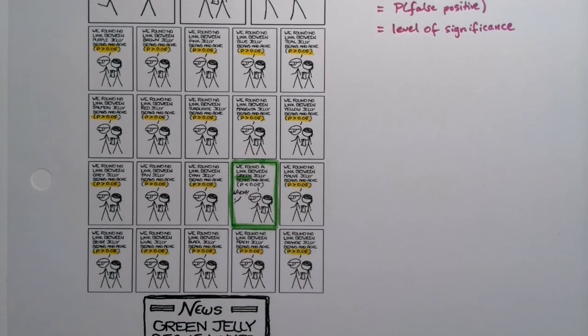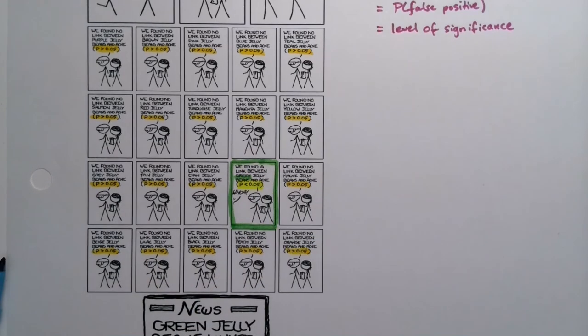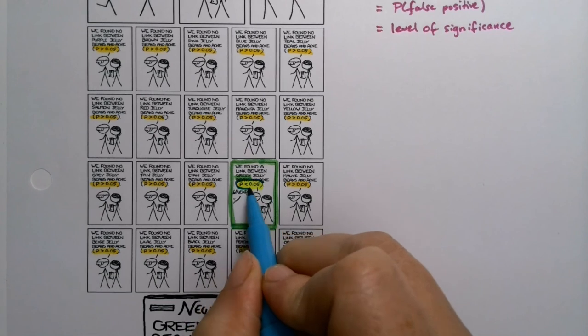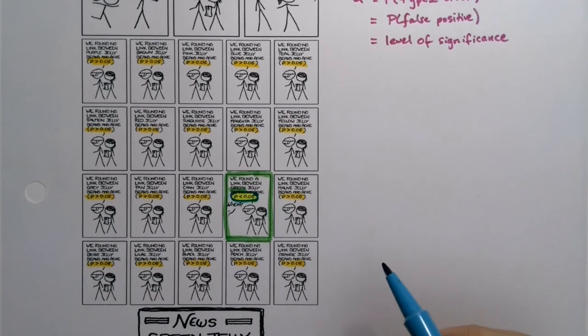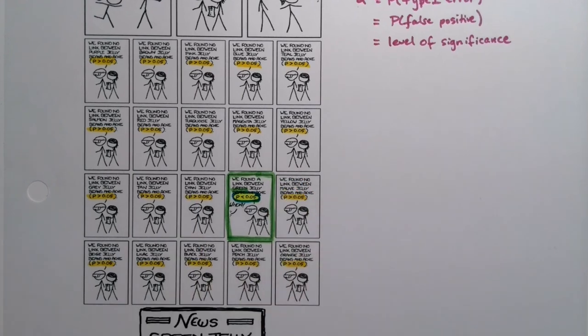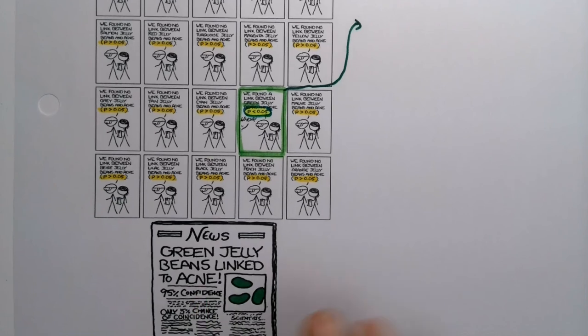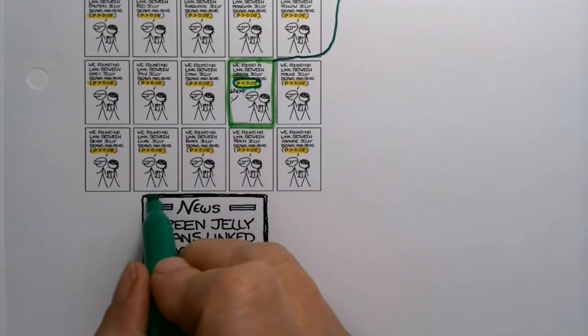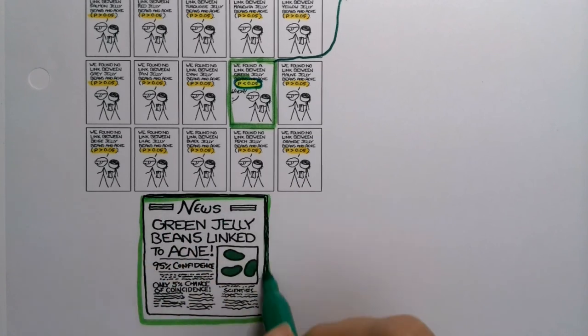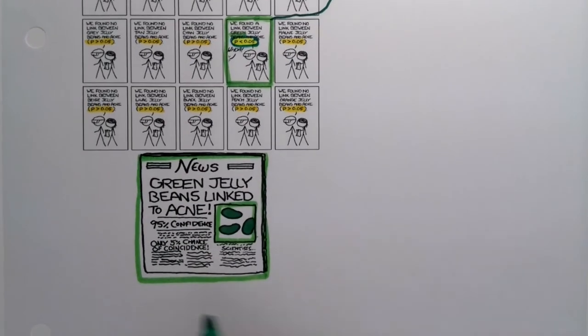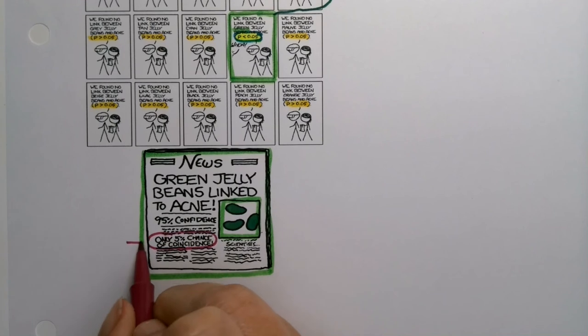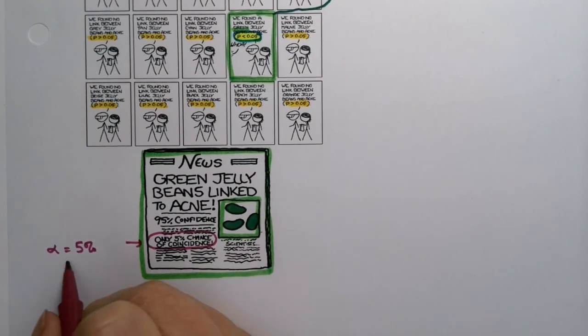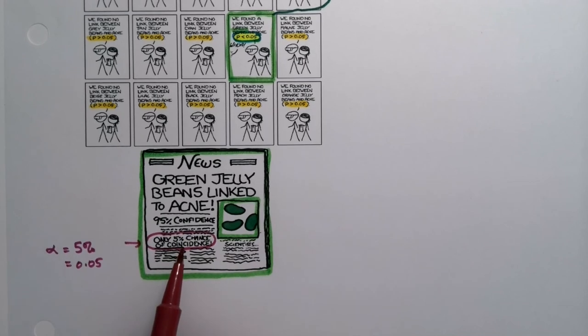And they say, oh, we did find a link there. P is less than 0.05. Hmm. Okay. So what's going on there? So is it true that green jelly beans should be banned? Well, probably not because there's something else going on here. Let me write that question down. Oh, but you can see it down below. Green jelly beans are linked to acne. See this right here. So green jelly beans linked to acne. They have a little green jelly beans in there. And of course you can imagine they're going to say, right? Only 5% chance of coincidence. That's talking about alpha. That's talking about your level of significance. 5%, 0.05. And so they're claiming it in the headlines.